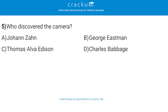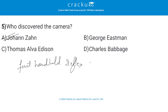Who discovered the camera? The correct answer is A, Johan Zahn. Johan Zahn was a German author and expert on light who wrote about the camera, magic lantern, telescopes and lenses. In 1685, he proposed a design for the first handheld reflex camera.